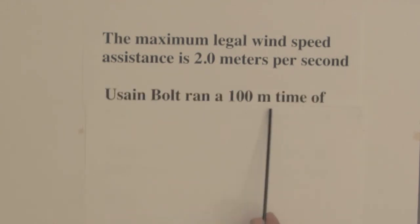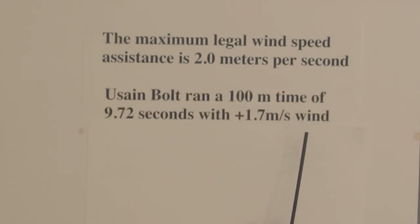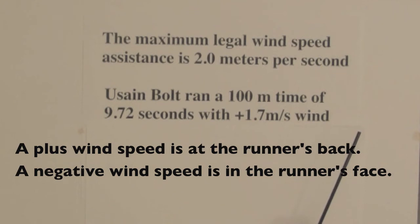Usain Bolt ran a 100 meter time of 9.72 seconds with a plus 1.7 meters per second wind. And he established a world record for this race.